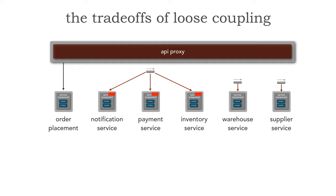The inventory service, upon decrementing inventory, realizes it needs to balance the amount in a certain warehouse, so it sends a fire-and-forget message — not directly to the warehouse service, but to a queue. All the inventory service knows is to send a message to that queue saying: we need more items in this warehouse. The warehouse service receives that message and tries to balance: do we have other stock in other warehouses to transfer? If not, it sends a message, again fire-and-forget, to a queue. The supplier service, listening on that queue, picks up that message and orders more stock for that particular warehouse.